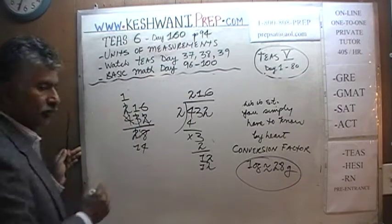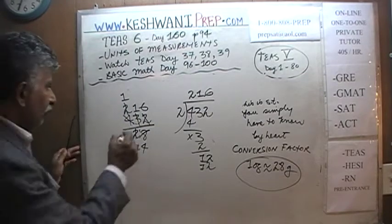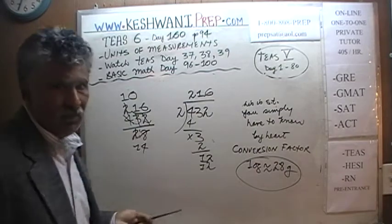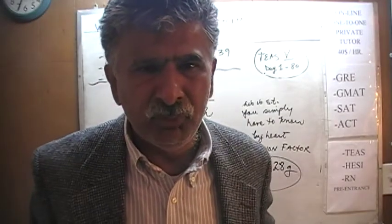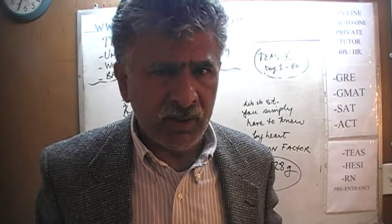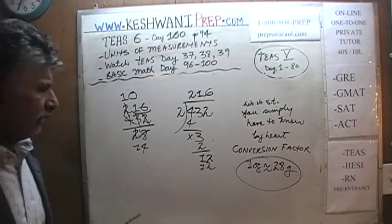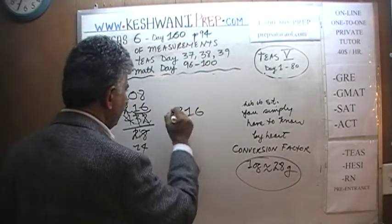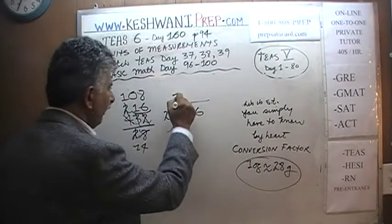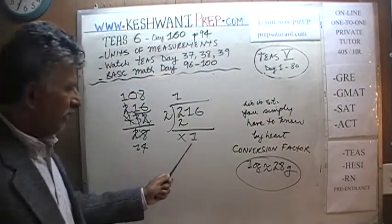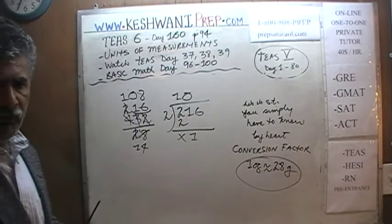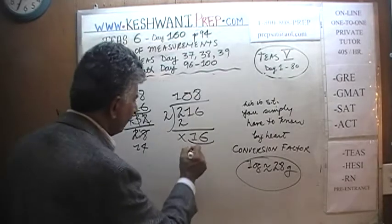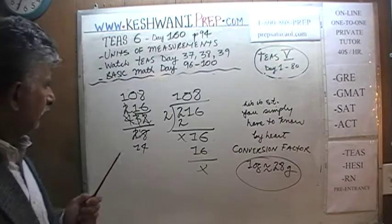Dividing 216 by 2: 2 has one 2, then 1 has no 2s so it joins the 6 to make 16, and 16 has eight 2s. So 216 divided by 2 is 108. And 14 divided by 2 is 7. Since we divided the top by 2, we must divide the bottom by 2 as well. Now we have 108 divided by 7.